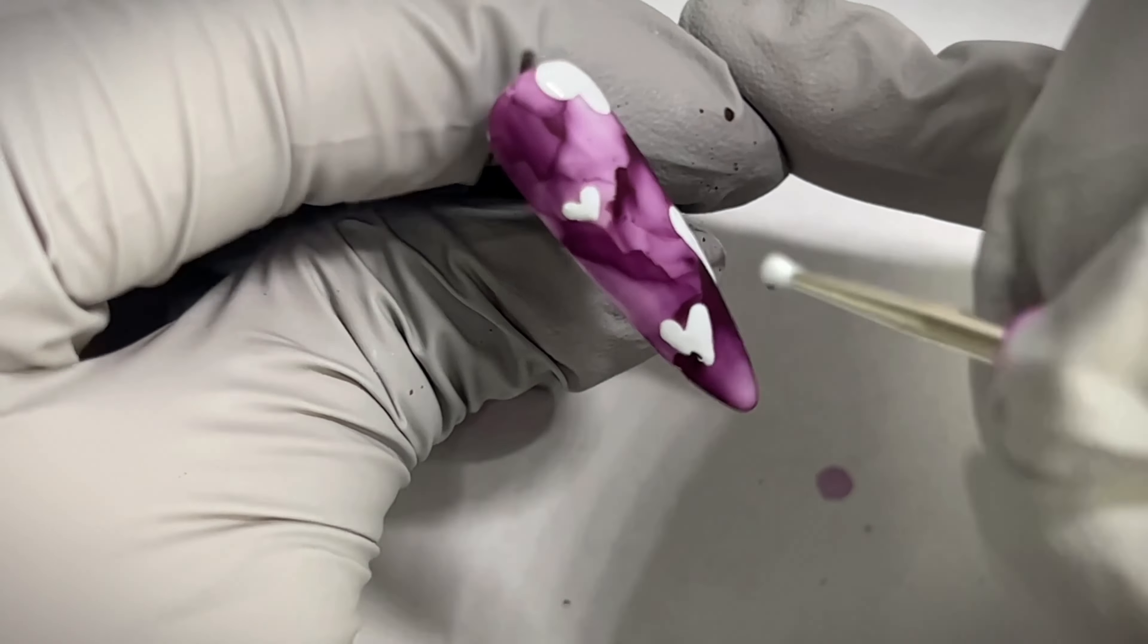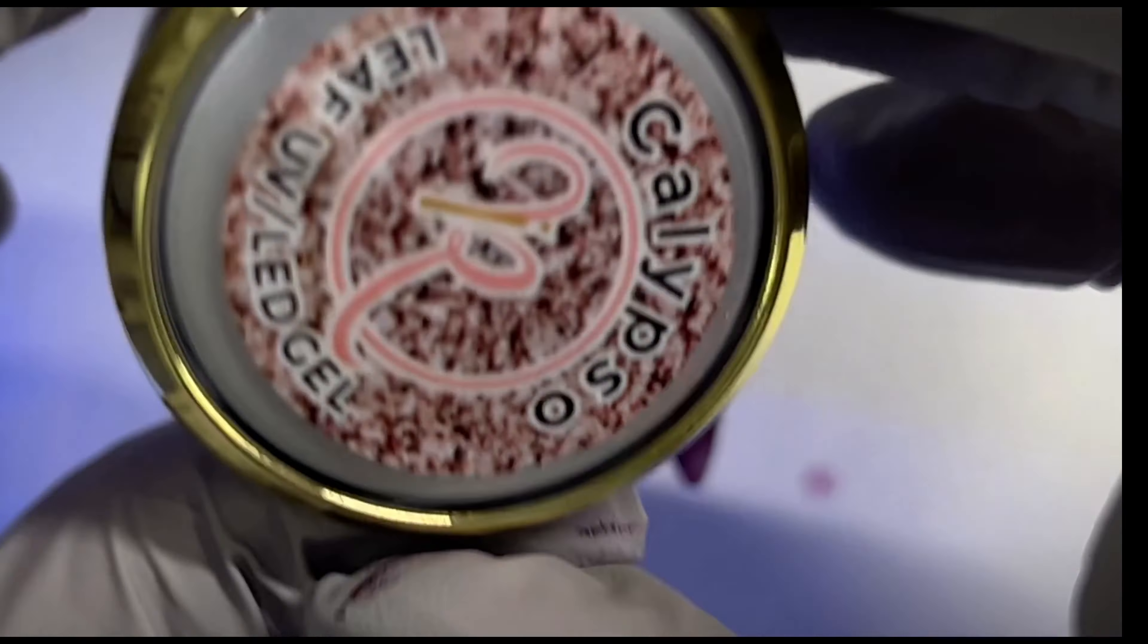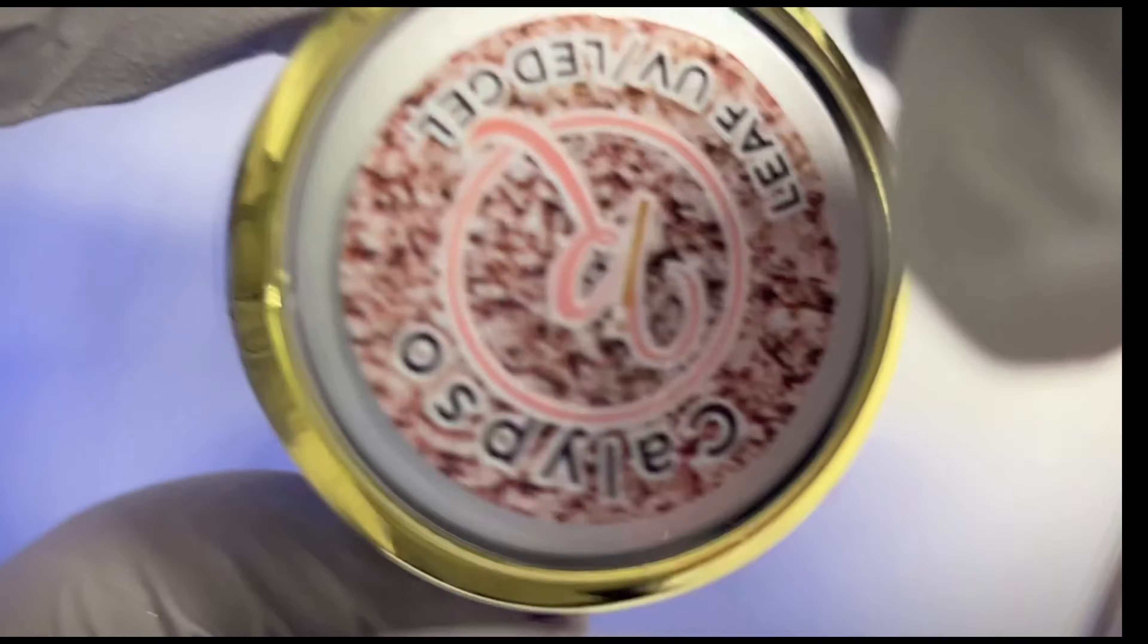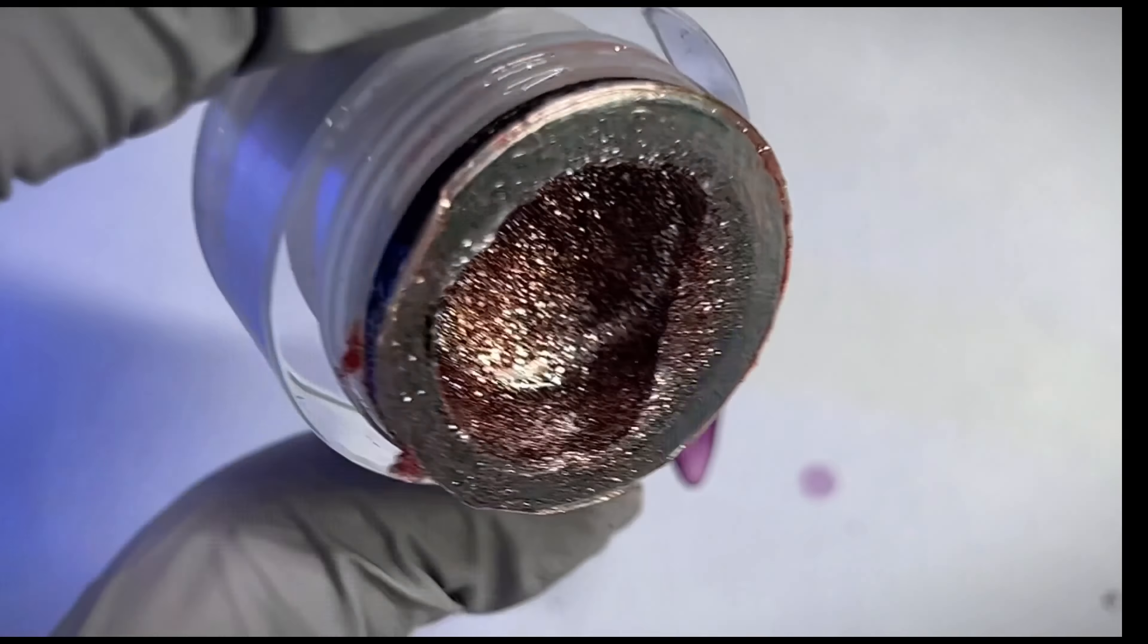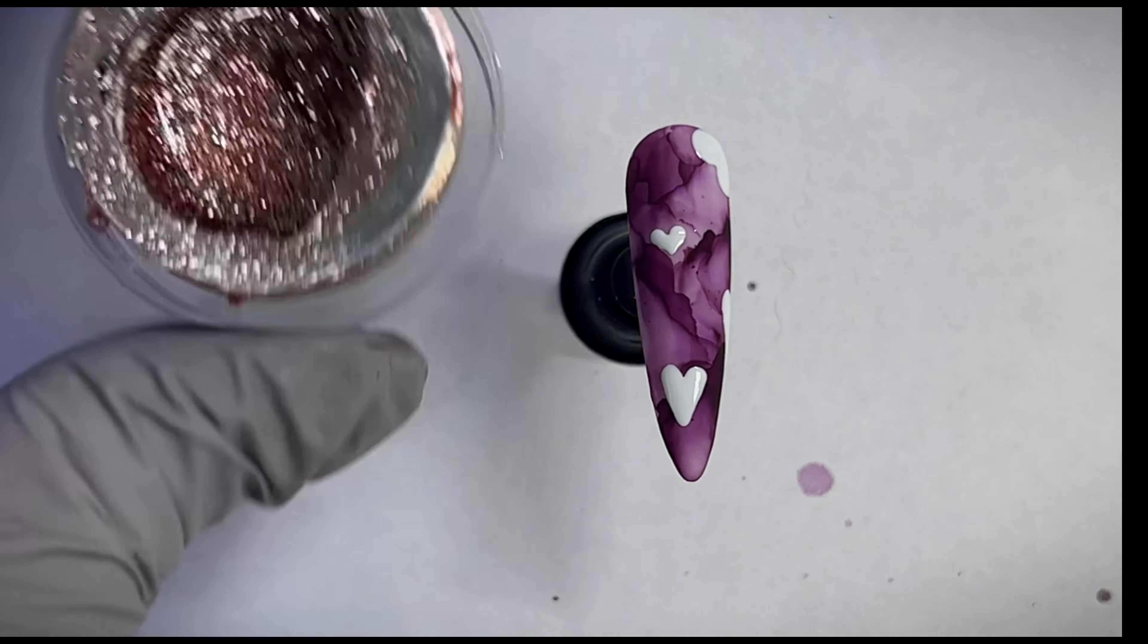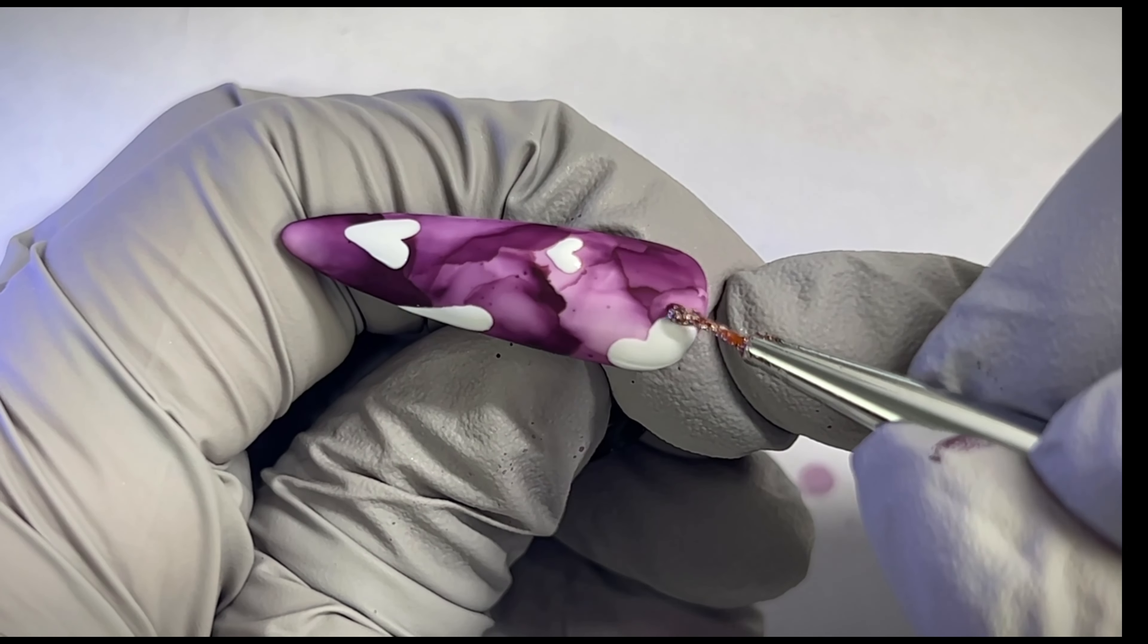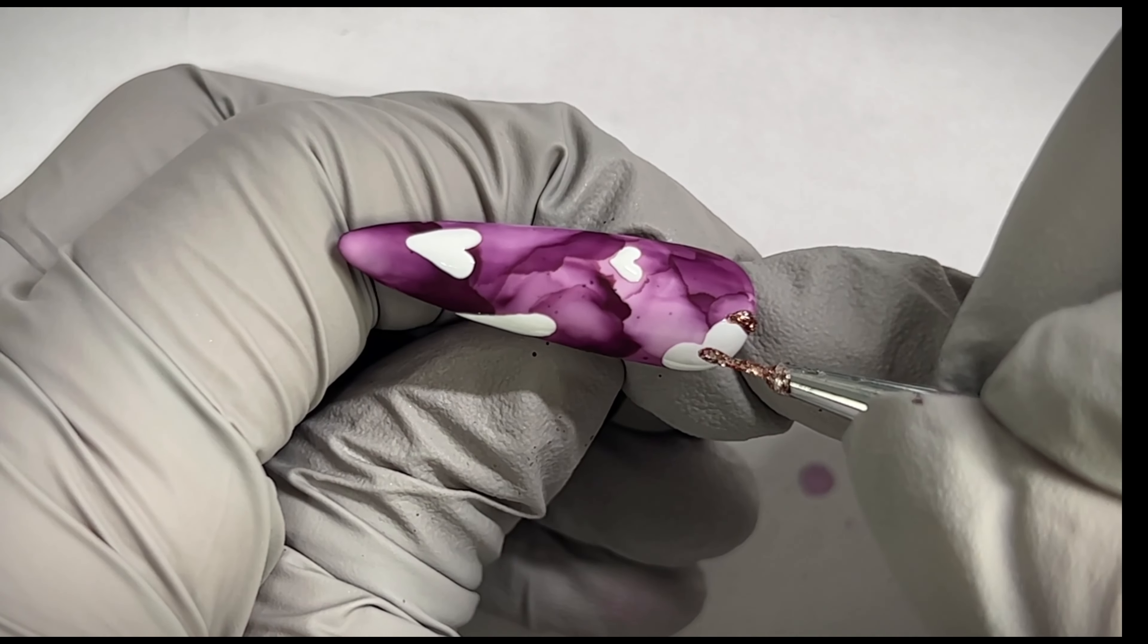I finished both nails and I cured them for 60 seconds. Madam Glam gel paints do take 60 seconds to cure, so just keep that in mind. I then went in with this gel from Red Iguana. I believe this is also similar to like a gel paint, but I use this to outline all of my hearts.